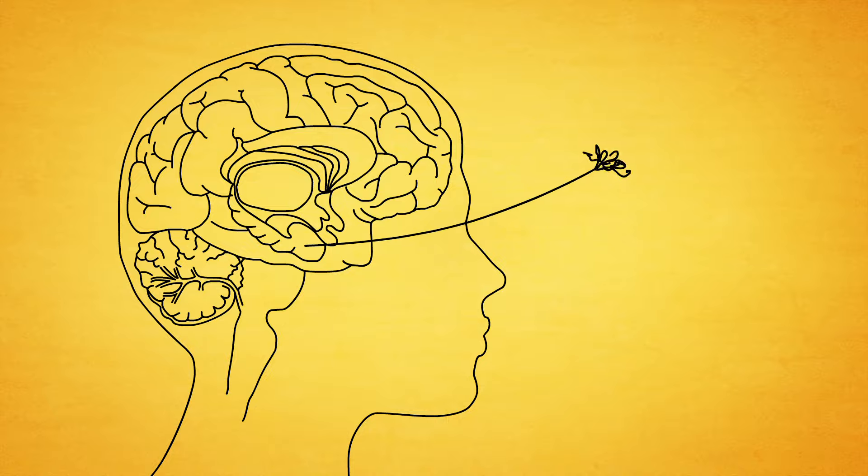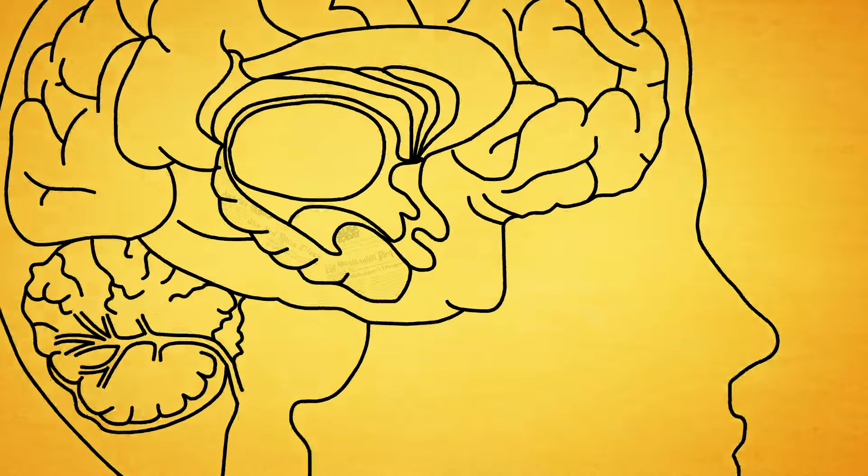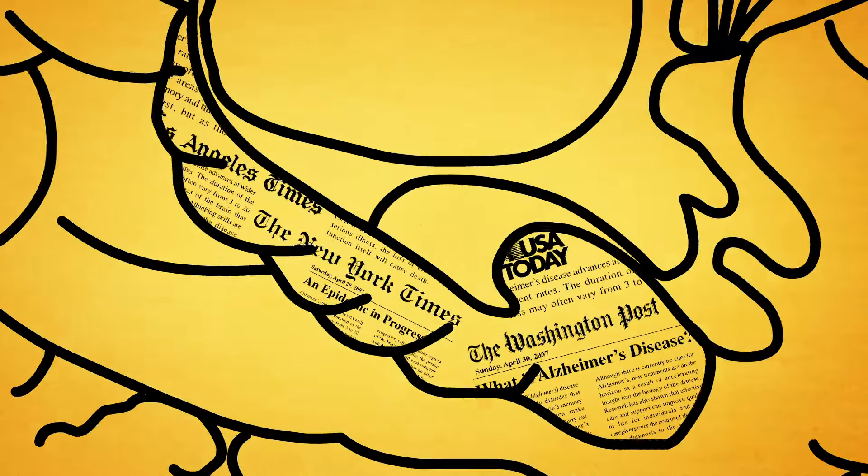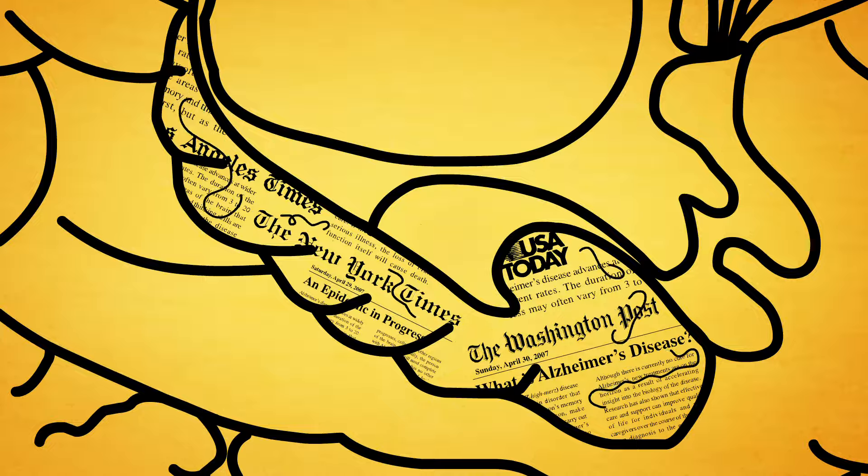They start here, in the hippocampus, the part of the brain where memories are first formed. Over many years' time, the plaques and tangles slowly destroy the hippocampus, and it becomes harder and harder to form new memories.